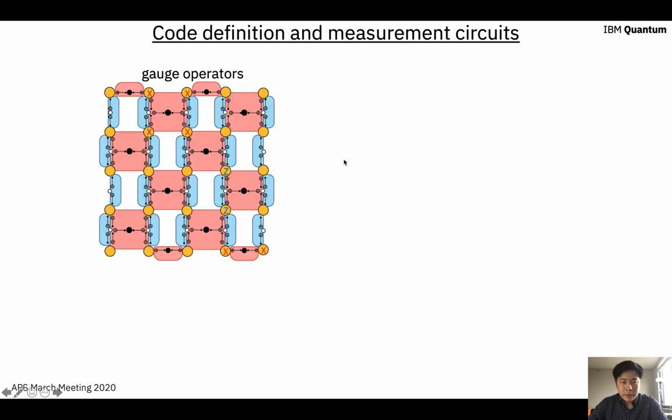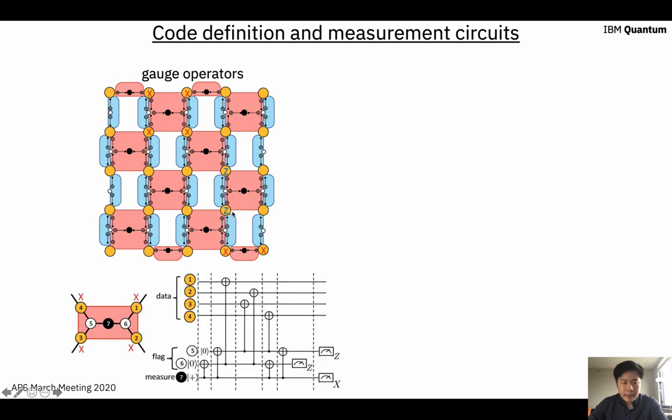To introduce the code in more details, the heavy hex code is a subsistence code, so it has gauge operators. In the bulk, there are basically two types: one is the four-body X gauge operator, the other is the two-body Z gauge operator. To measure the four-body X gauge operator, we use three ancilla qubits in the middle. The black one is the usual measurement syndrome qubit which will read out the value of the gauge operator. The white ones we call flag qubits. They have two uses: one is to mediate entangling between the data and the measurement qubits, the other is that they can also significantly reduce the logical error rates, as we will discuss later. We can see a single Pauli X will be propagated by the circuit to four X on the data qubits, such that they entangle all the data qubits with the measurement qubit. Then through measuring the value of the measurement qubit, you can read out the value of the gauge operator.